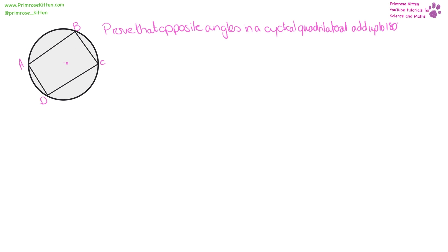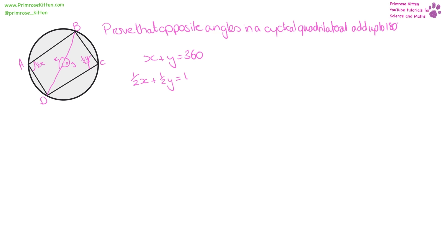Our last one: we need to prove that the opposite angles in a cyclic quadrilateral add up to 180 degrees. The first thing I'm going to do is draw lines from the center to opposite angles. We say this angle is X and this angle is Y. We know that X plus Y equals 360 because it goes round a full circle. We know that angles at the center are twice those at the circumference, so the circumference angles are half Y and half X. Since X plus Y is 360, half X plus half Y must equal 180.